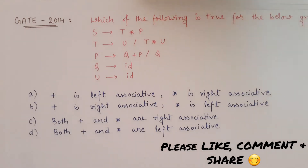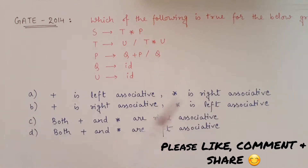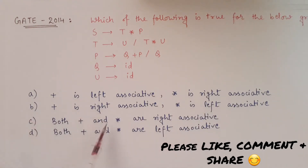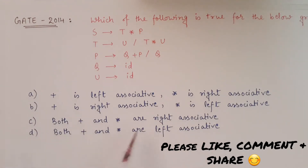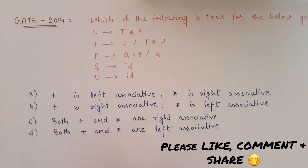Option A says plus is left associative and star is right associative. Option B says plus is right associative and star is left associative. Option C says both plus and star are right associative. Option D says both plus and star are left associative.